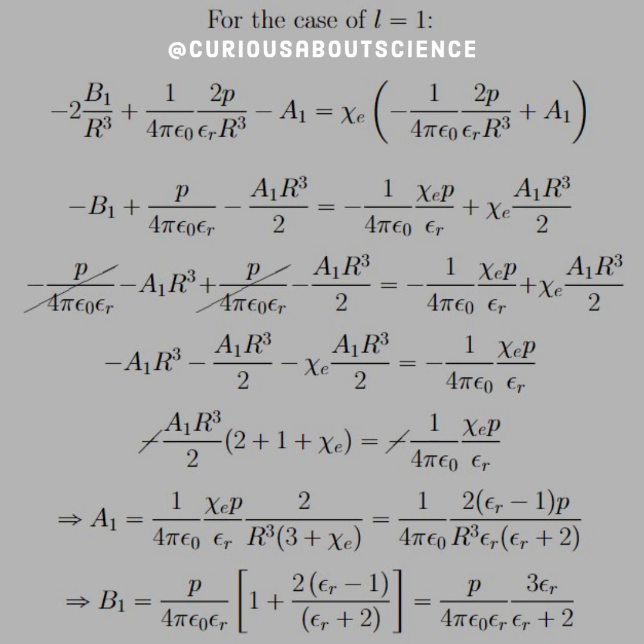which we see here, again, in the third line. Make sure to apply the negative sign to both of those terms. The negative sign, therefore, cancels this P over 4 pi epsilon, not times epsilon R term. And then we're left in the fourth line with a bunch of expressions.